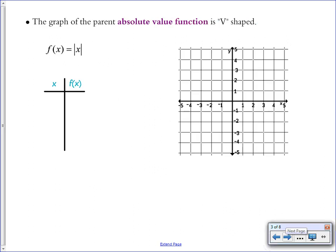The graph of the parent absolute value function is v-shaped, and here's why. For f(x) equals the absolute value of x, the absolute value brackets make whatever's inside become positive. So if you input negative 2, the output f(x) is going to be positive 2, because you're taking the absolute value of it.